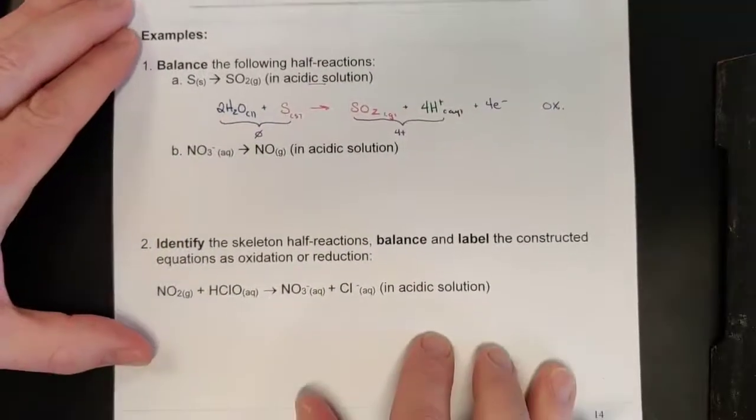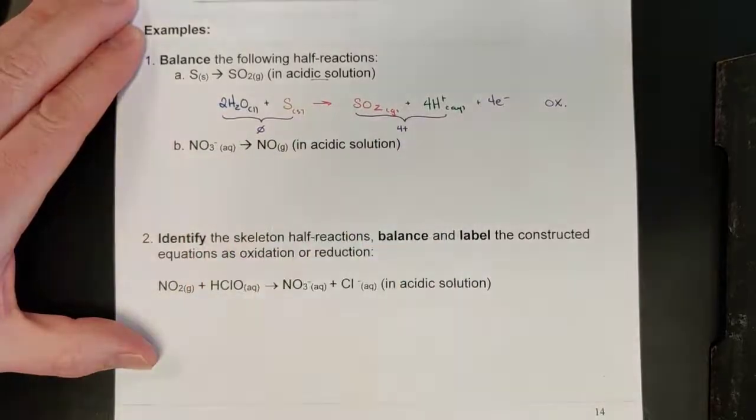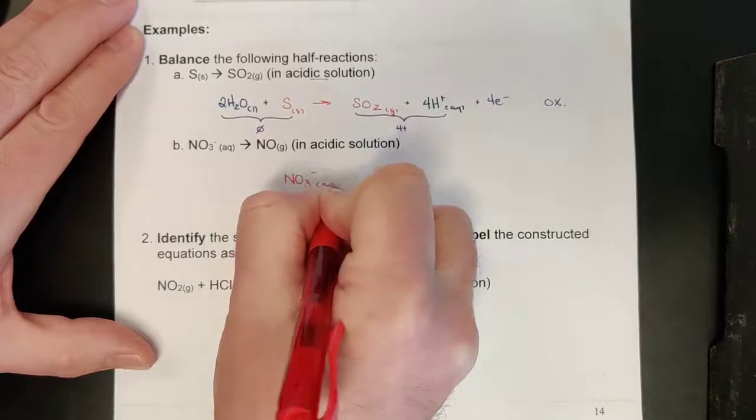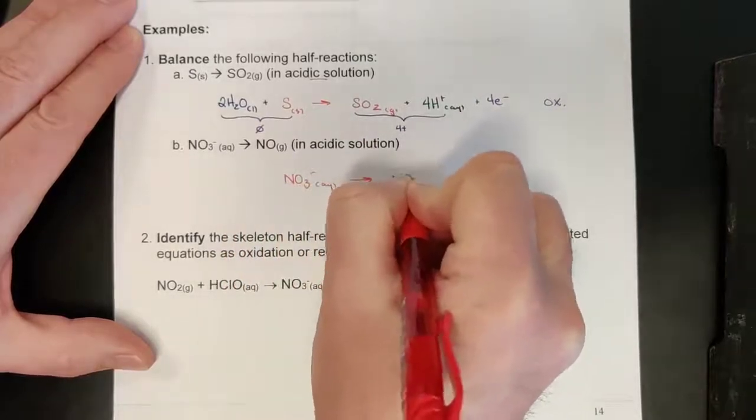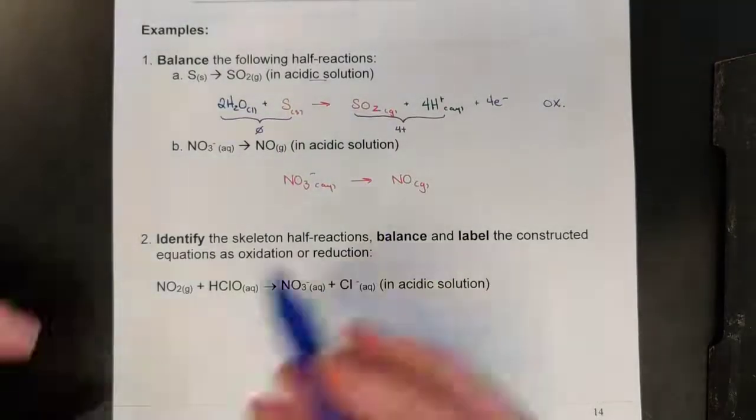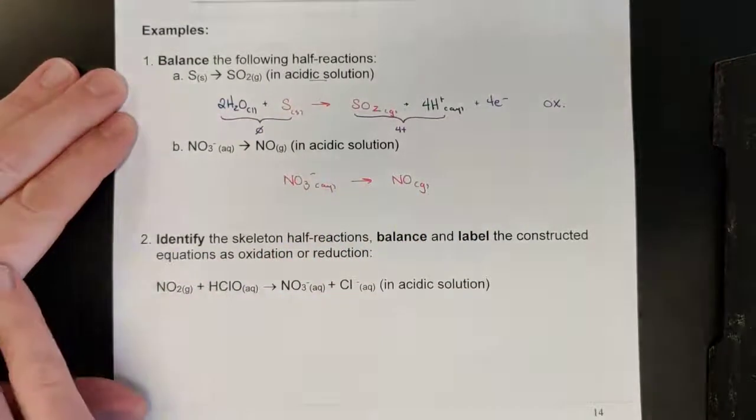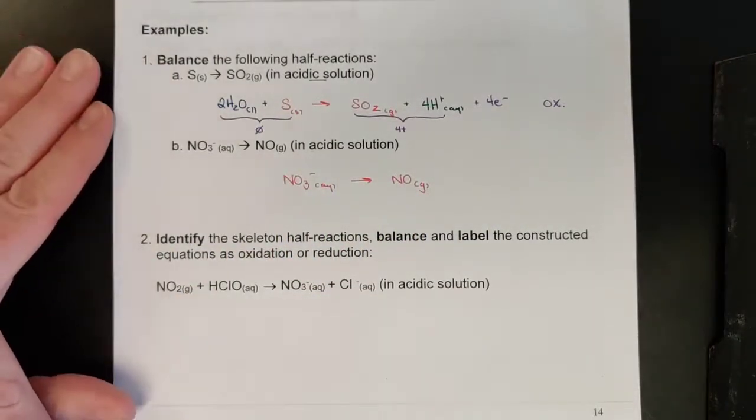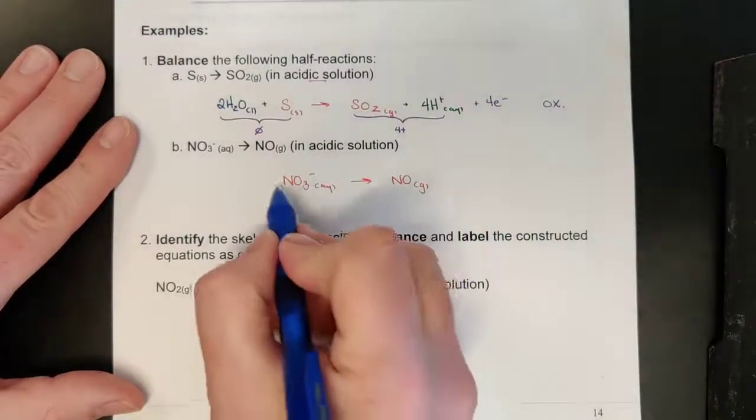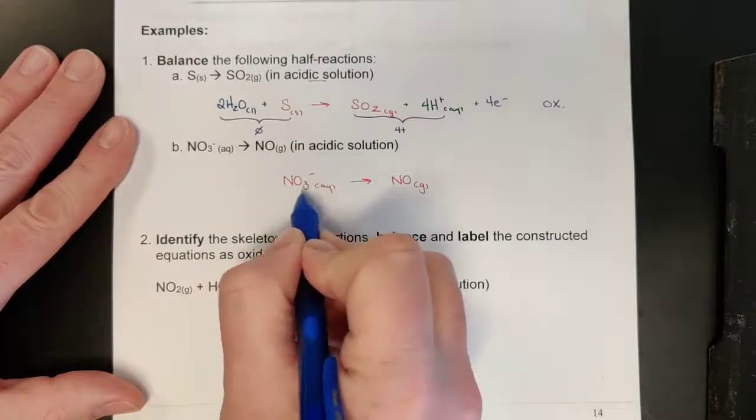Let's see what happens in a half reaction here, in which we start off with nitrate ions in solution, somehow forming nitrogen monoxide gas. Now, as we look at this one, we do have to balance our nitrogens. That's the only element that we have that is not oxygen or hydrogen. And so, one nitrogen each, that's good. Now, we can start balancing our oxygens.